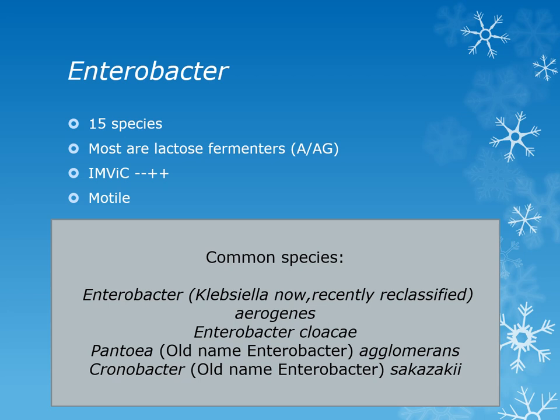There are 15 species of Enterobacter, and they resemble Klebsiella macroscopically — both produce very mucoid pink colonies on MAC. Motility-wise, Enterobacter is motility positive while Klebsiella is negative. Most Enterobacter are lactose fermenters, so your TSI is acid over acid, and they are vigorous gas producers. The IMVIC tests are the opposite of Escherichia: indole and methyl red are negative, while Voges-Proskauer and citrate are positive. Common species include Klebsiella aerogenes (formerly Enterobacter aerogenes), Enterobacter cloacae, Pantoea agglomerans, and Chronobacter sakazakii.